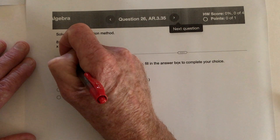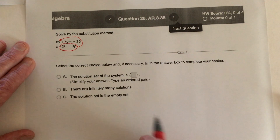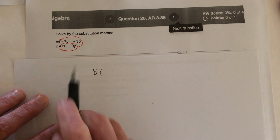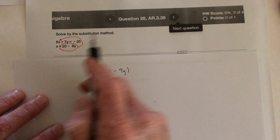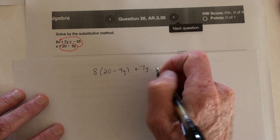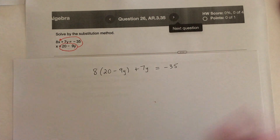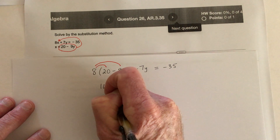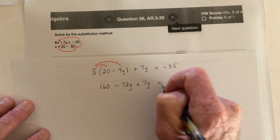So the substitution method means right here they already solved for x. So all you need to do is take that and plug it in for x on the top equation. So that would look like the top equation says 8 times x, and then replace the x with 20 minus 9y. And then it has plus 7y and equals negative 35. So that's the substitution method. Then go ahead and distribute — multiply by 8 and multiply by 8. So 8 times 20 is 160, minus 8 times 9 is 72y, and then plus 7y, and it equals negative 35.